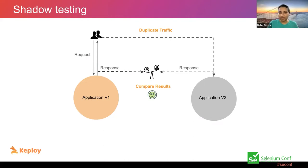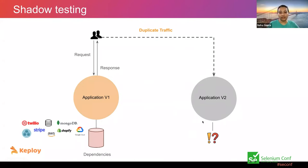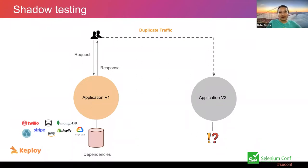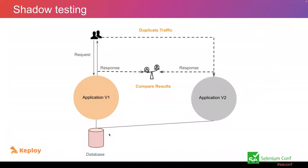Shadow testing doesn't work when your application has dependencies. We were confused about what our application would talk to across different microservices or third-party services — we can't connect it to the production database directly, because all POST, PUT, and DELETE mutation calls would fail. We were curious how people were handling that, and discovered that some people actually connect their new version to the production database itself.